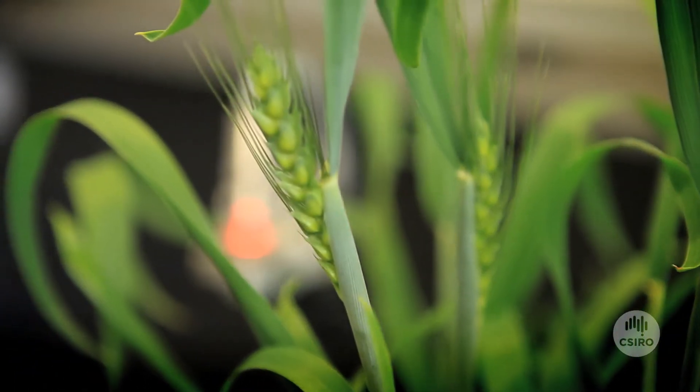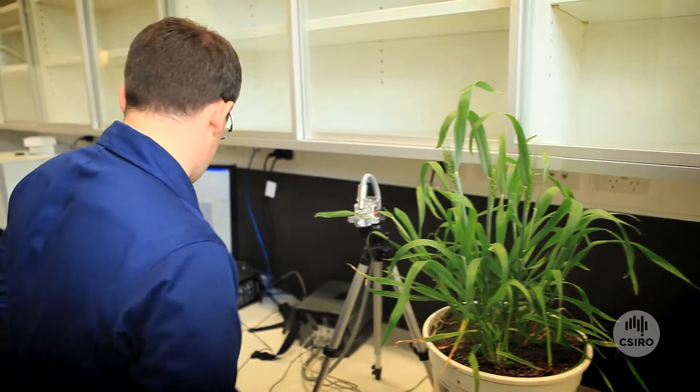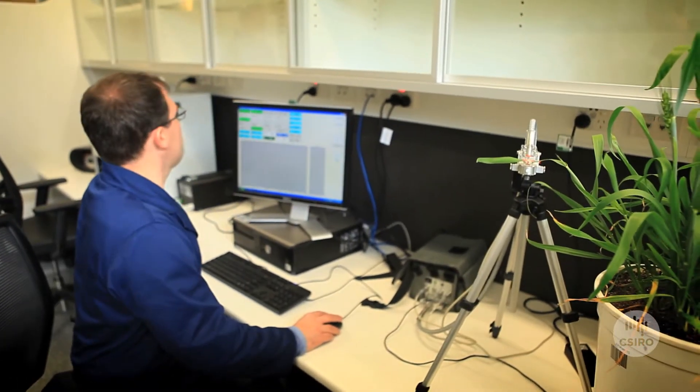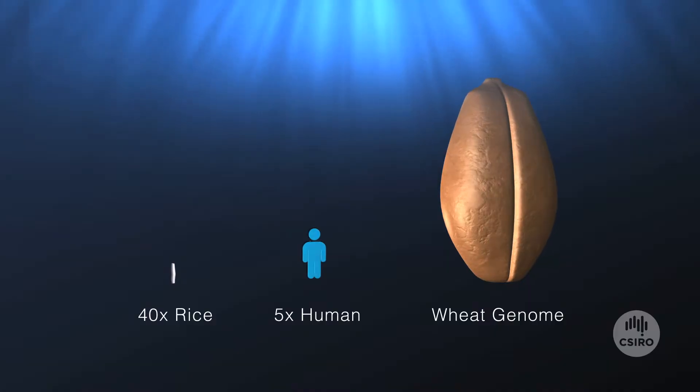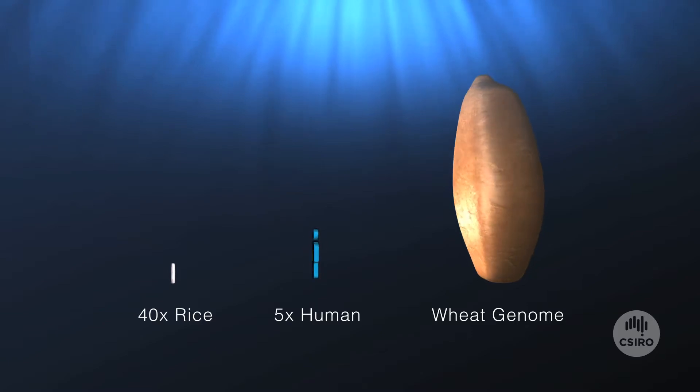Unfortunately, these aims are much easier said than done. The wheat genome is one of the most complicated around, being approximately five times larger than the human genome and 40 times larger than the rice genome.